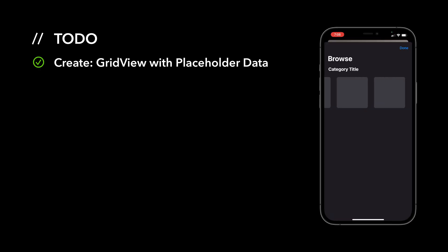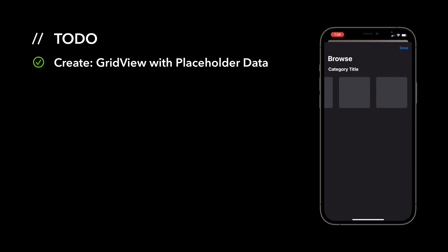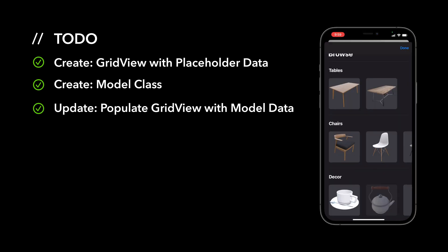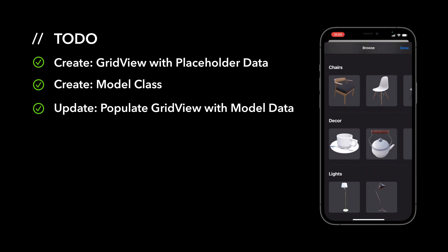We have several action items for this video. First, we have to create a horizontal grid view that will later be populated with thumbnail images — for this step we'll populate it with placeholder data. Second, we have to create a model class with relevant properties and methods for our 3D models. And third, we'll update our grid view to use model data to display thumbnails.